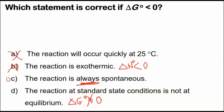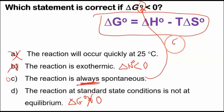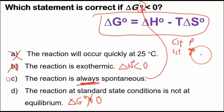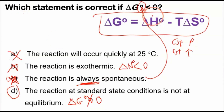It's not always spontaneous because the standard ΔG° is only valid at one bar pressure, and this equation holds only for constant pressure and constant temperature conditions — that's how it was derived. So even though 'always spontaneous' looks appealing, it's only spontaneous under those specific conditions. Of these four choices, the best answer is that the reaction at standard state is not at equilibrium.